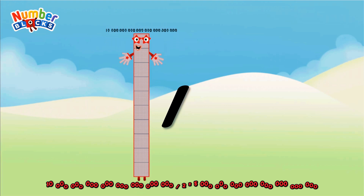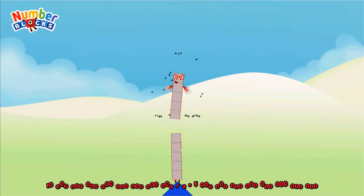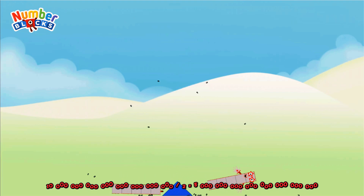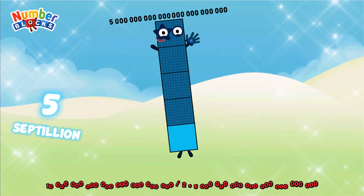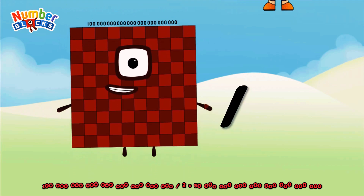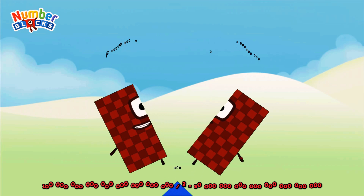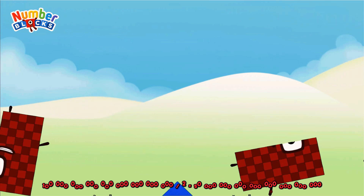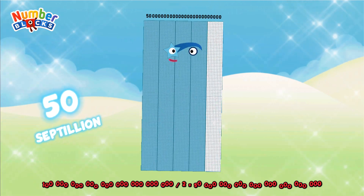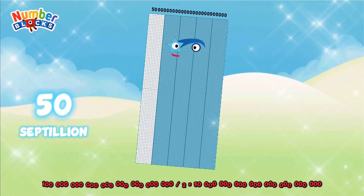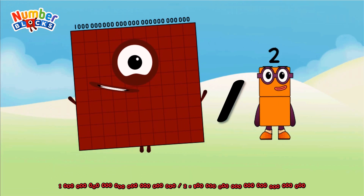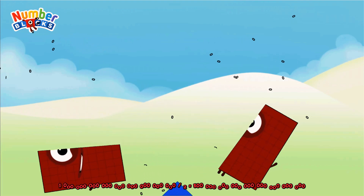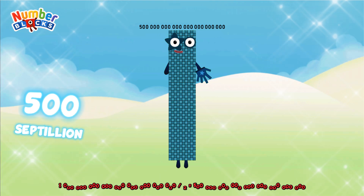Ten septillion divided by two equals 5 septillion. One hundred septillion divided by two equals 50 septillion. One octillion divided by two equals 500 septillion.